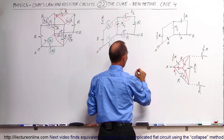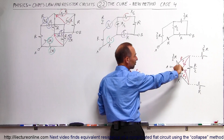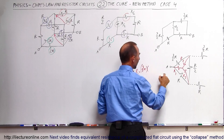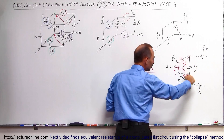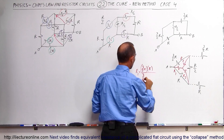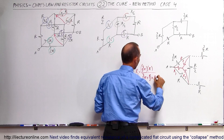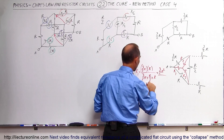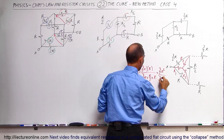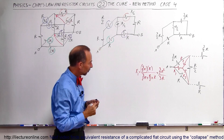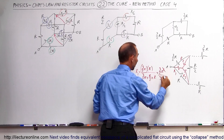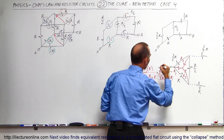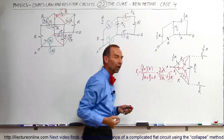For the delta-to-Y conversion, you take R1 equal to the product of the two adjacent resistors divided by the sum of the three resistors in the delta. So R1 = (3/2R × 1R) / (3/2R + R/2 + R). In the numerator we get 3/2 R², and in the denominator 3/2 + 1/2 + 1 = 3R. This cancels out, and 3/2 divided by 3 equals 1/2. So R1 equals one-half R.